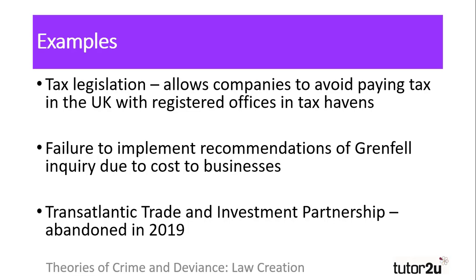A final example was the long-proposed Transatlantic Trade and Investment Partnership, a trade agreement between the US and the EU, which would have allowed companies to circumvent standards on genetically modified food, and also allowed companies to sue governments if they tried to pass laws that were detrimental to their business. An example of this is Philip Morris Tobacco trying to sue the Australian government for banning logos on cigarette packaging. TTIP, as it was known, was postponed in 2016 and finally rejected by EU nations in 2019.